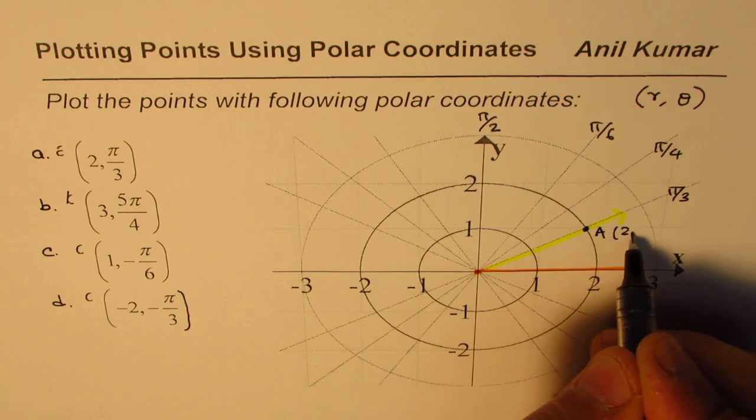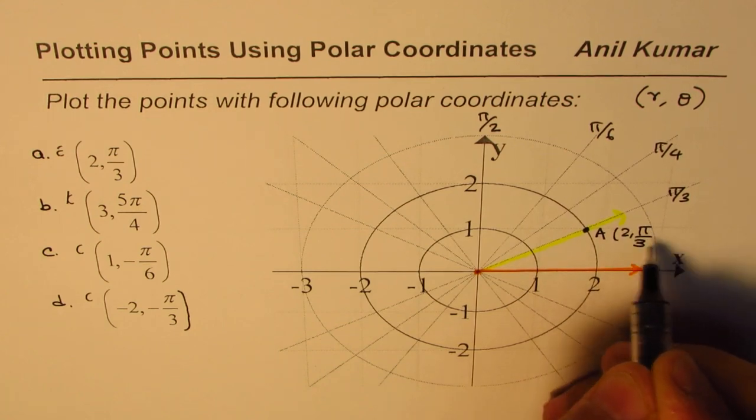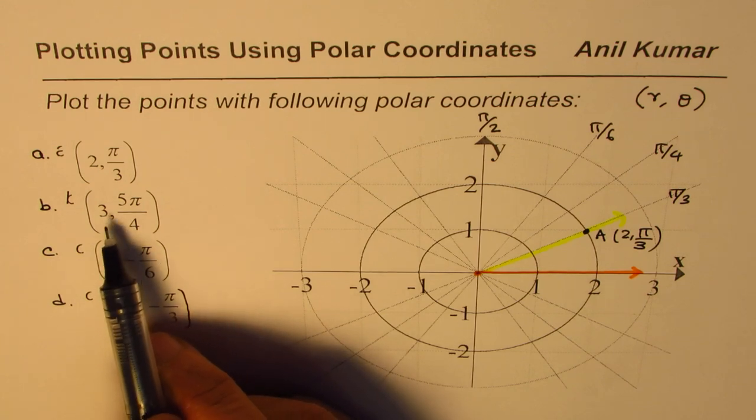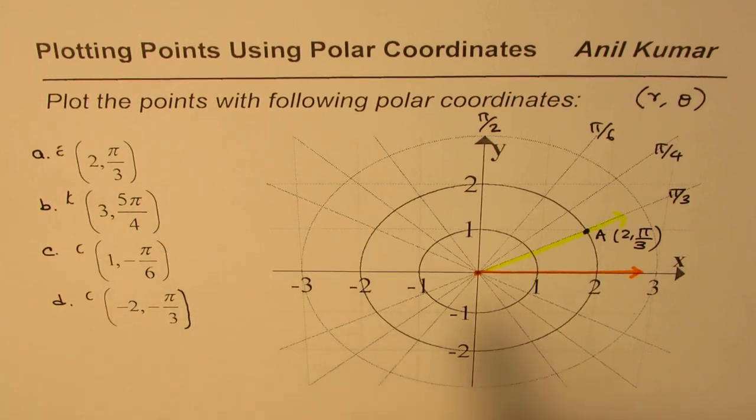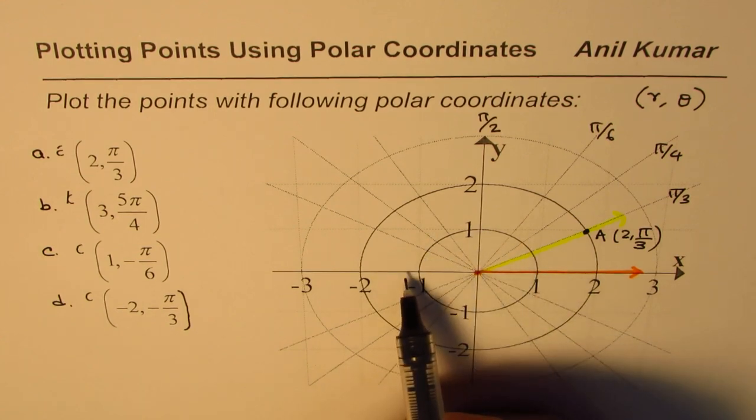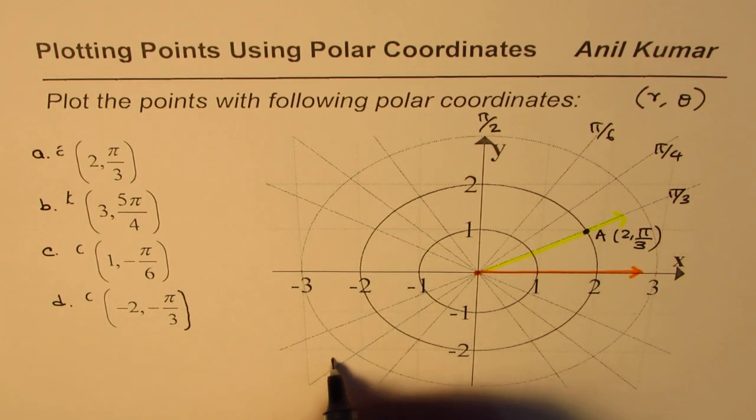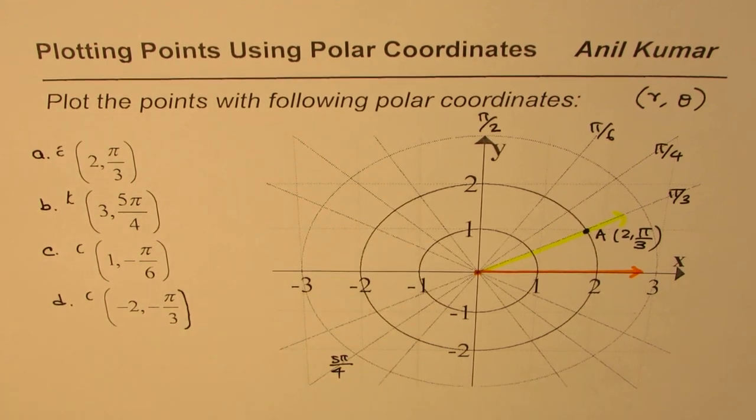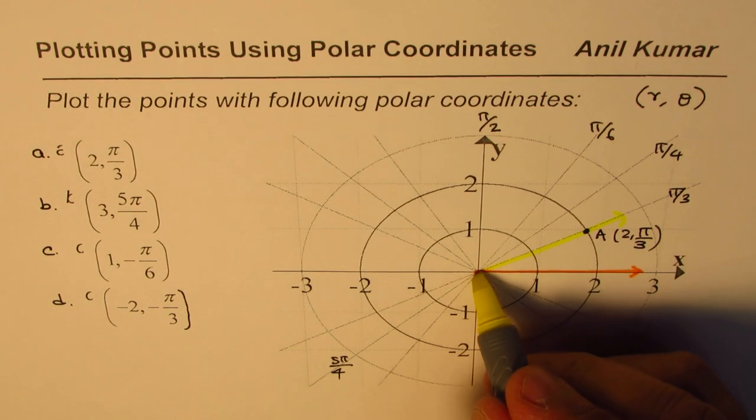Let's look into the next point which is (3, 5π/4). Now this is 1π/4, 2π/4, 3, 4π/4, and this one is 5π/4. So the ray which we identified this time is kind of here, 5π/4.